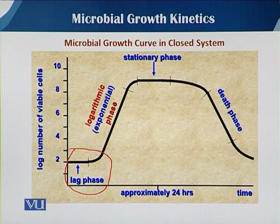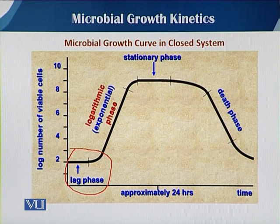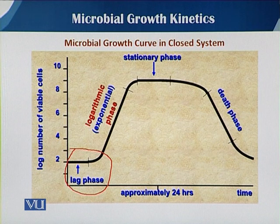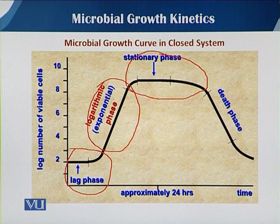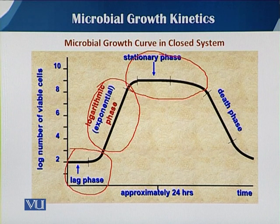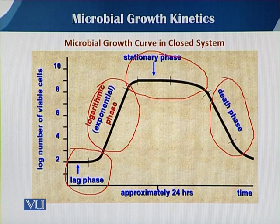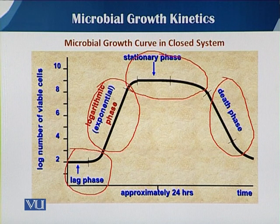There is a lag phase, which is an acclimatization stage in which there is no increase in cell number, but the cells utilize some substrate for their maintenance. Then there is an exponential phase, in which there is maximum utilization of the substrate. Then there is a stationary phase, in which the organism's metabolic pathways remain active but the death rate becomes equal to the birth rate. In the decline phase, the metabolic pathways do not totally become inactive, but the death rate exceeds the birth rate.